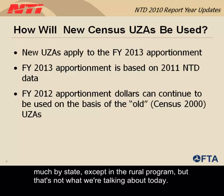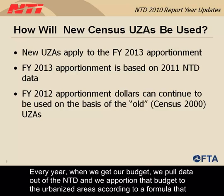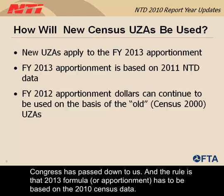We think by urbanized areas, not by states except in the rural program. Every year when we get our budget, we pull data out of the NTD and apportion that budget to the urbanized areas according to a formula that Congress has passed down to us. The rule is that the 2013 apportionment has to be based on the 2010 census data.